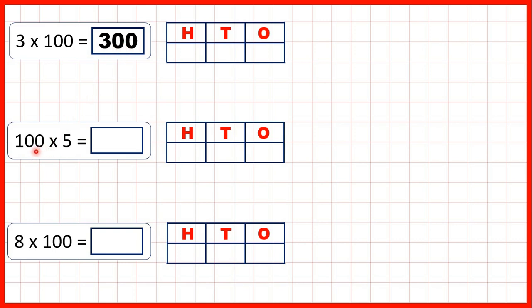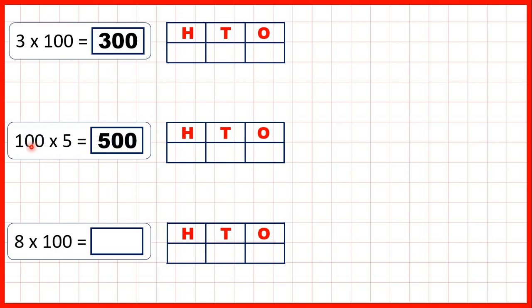Now we have 100 times 5. That's 500 because 1 times 5 is 5, and then we have two end zeros in the question so we need two end zeros in our answer.